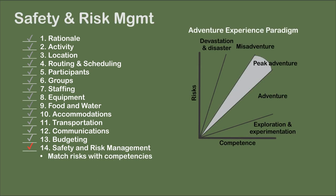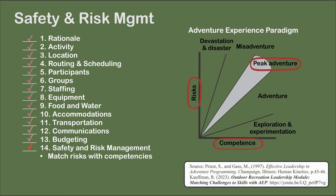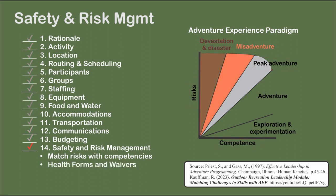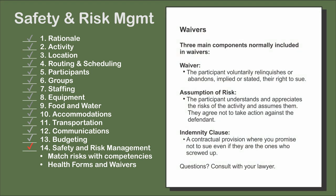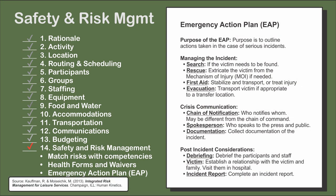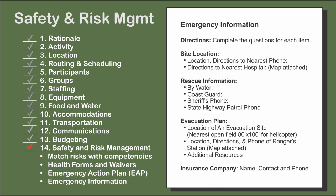The first step in trip planning and risk management is to match the challenges and risks of the activity with the skills and competencies of the participants. Most of the sections in this presentation can be viewed as contributing to risk management. Many accidents and lawsuits result when a mismatch occurs. Health forms and participant waivers are usually required and help reduce risks. An emergency action plan outlines the actions taken in case of a serious incident, including managing the incident, crisis communications, and post-incident considerations. An emergency information document includes evacuation plans, emergency contact phone numbers, hospital, police, and emergency locations, search and rescue procedures, missing persons forms, and who to contact if there is an incident.